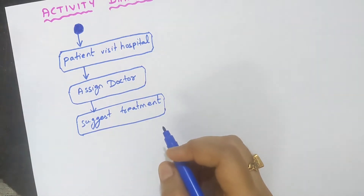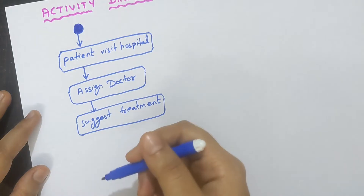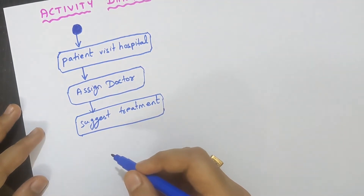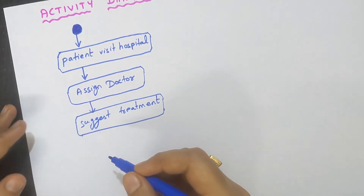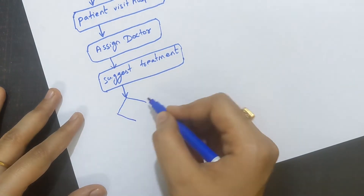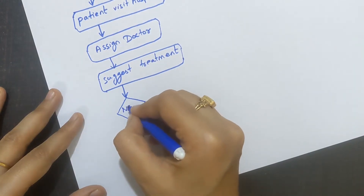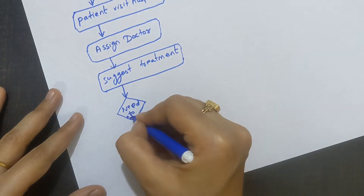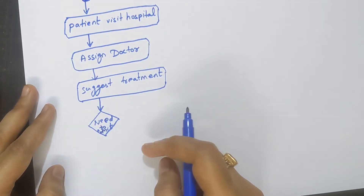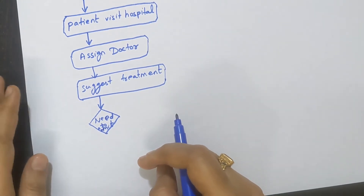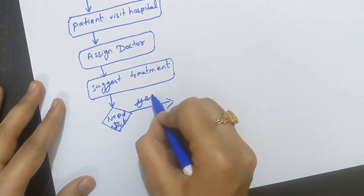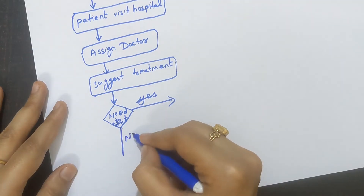After suggesting the treatment, the patient will find out whether they need to be admitted or not. The doctor may say you need to get admitted, or may say the prescribed medicines are enough. So next, draw a decision diamond with the label 'Need to Admit?' — yes on one side, and no on the other side.